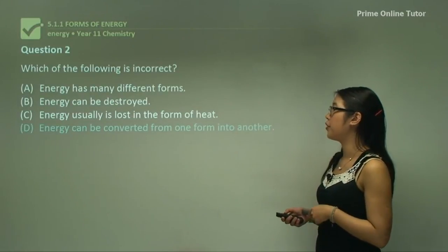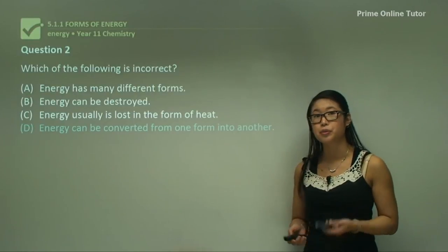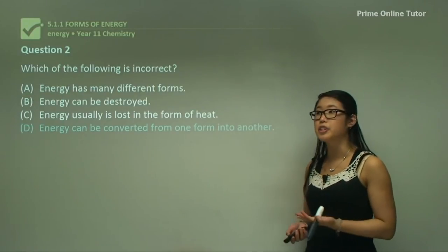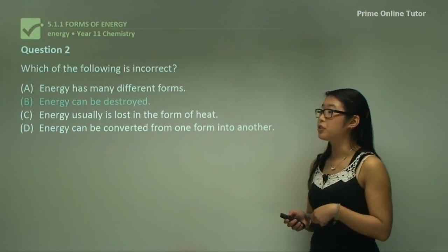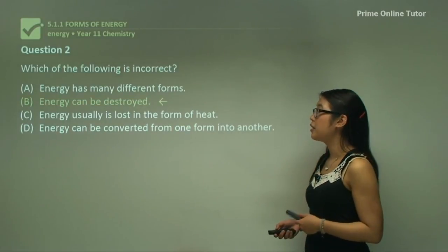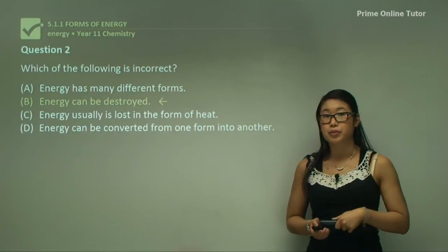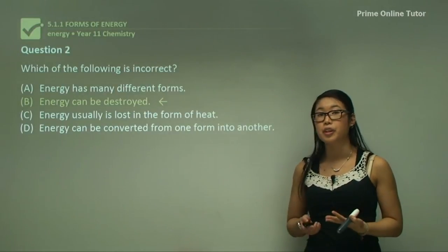Energy can be converted from one form to another. Yes, it's true. We convert from electrical energy to heat energy or vice versa. Energy can be destroyed. This one is incorrect because energy can never be destroyed. Energy is always just converted into another form.